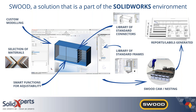SWOOD allows custom modeling that is parametric, with ease of use. It provides a selection of materials, libraries of connectors and standard frames, as well as edge bands. All of this adjusts accordingly depending on how you change the superior or inferior dimensions of your cabinet, wardrobe, or bureau. The smart functions implemented within SWOOD allow the model to change fluidly with no errors.